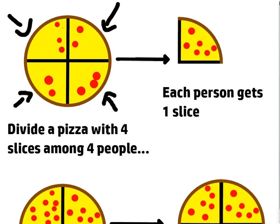And let's say I divide it among four people. Well, each person then must get how many slices? One slice, right? Because four divided by four is one.